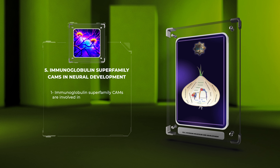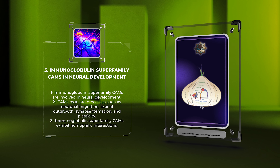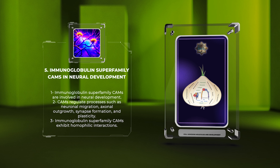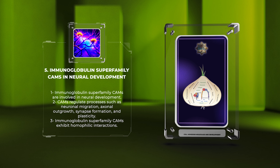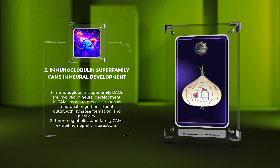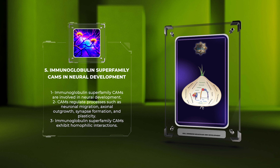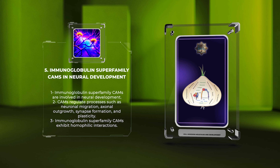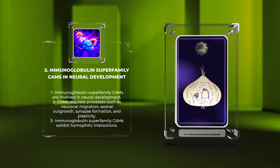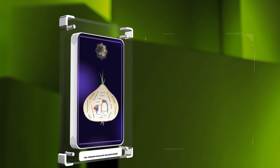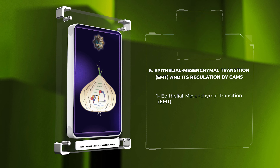The immunoglobulin superfamily CAMs, including NCAM, L1-CAM, and Neurofascin, are essential players in neural development. They regulate processes such as neuronal migration, axonal outgrowth, synapse formation, and plasticity. These CAMs exhibit homophilic interactions, where molecules on neighboring cells bind to each other, promoting cell adhesion and signaling events necessary for proper neural circuit formation.